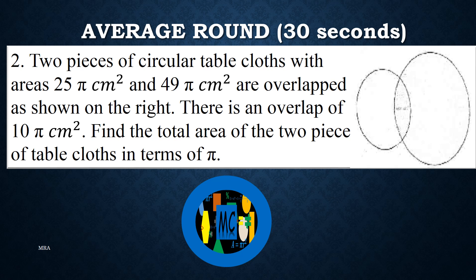Two pieces of circular table cloths, with areas 25 pi square centimeters and 49 pi square centimeters, are overlapped as shown on the right. There is an overlap of 10 pi square centimeters. Find the total area of the two pieces of table cloths in terms of pi.